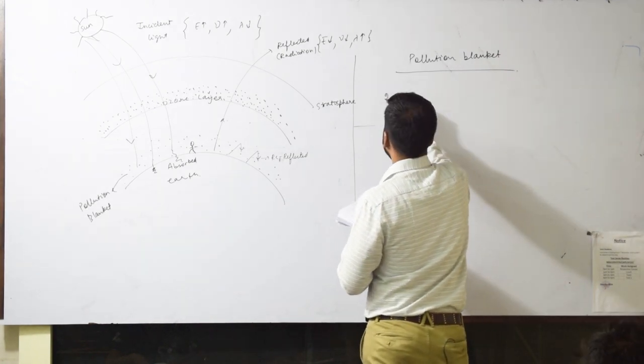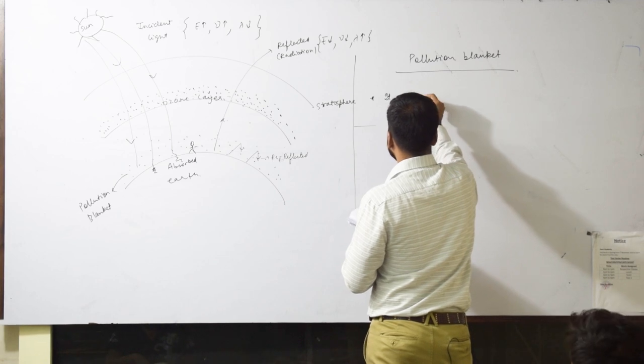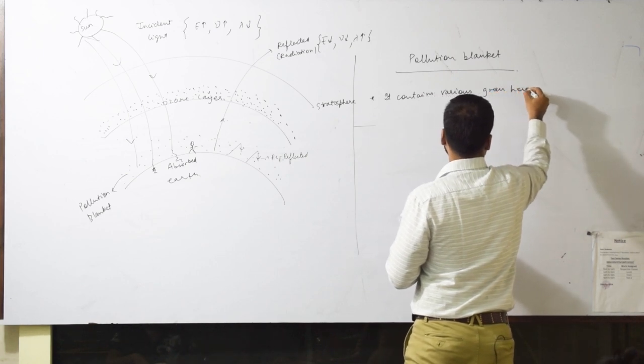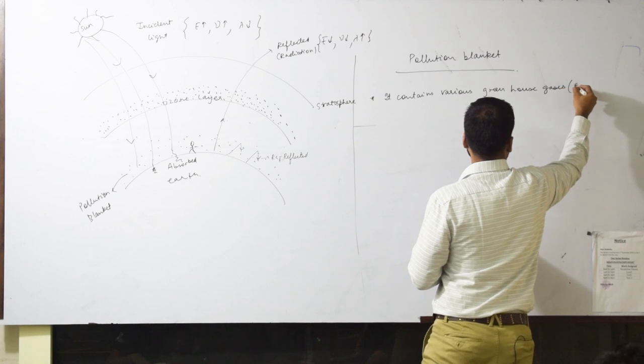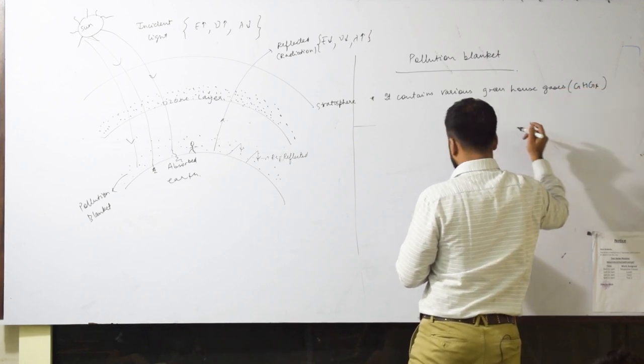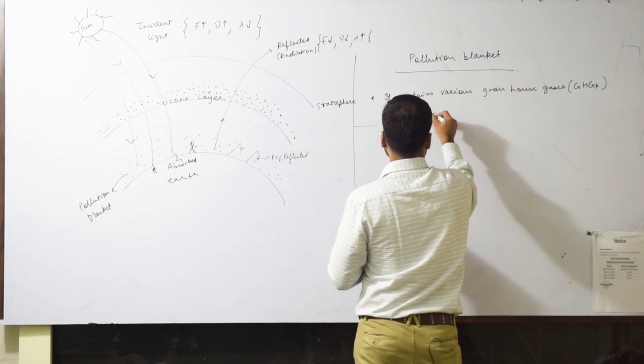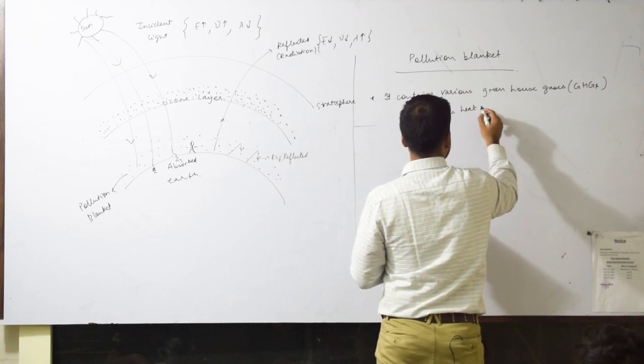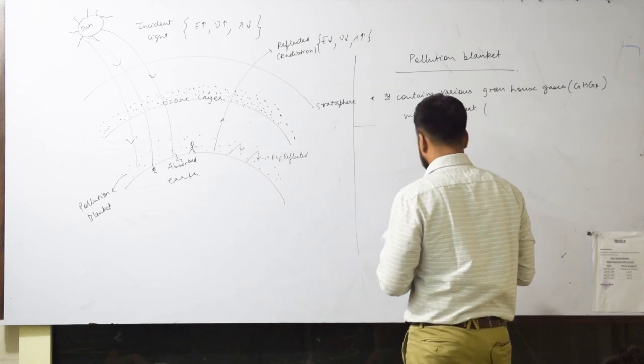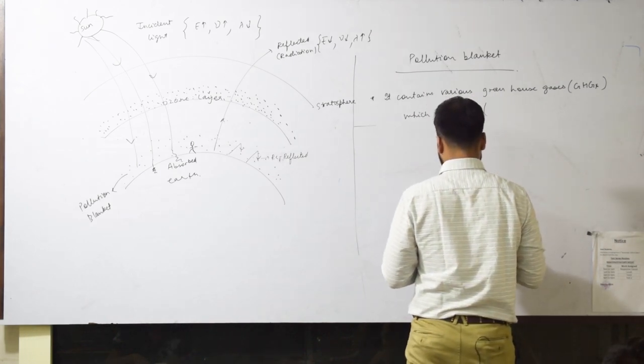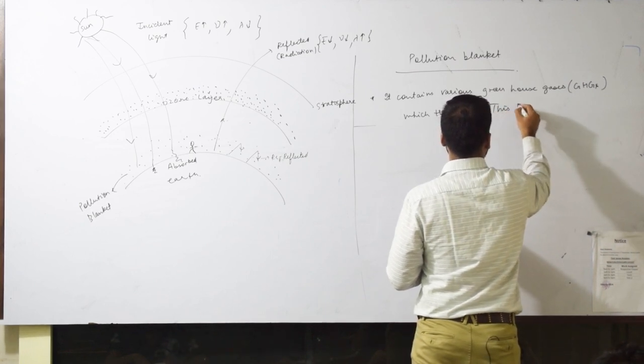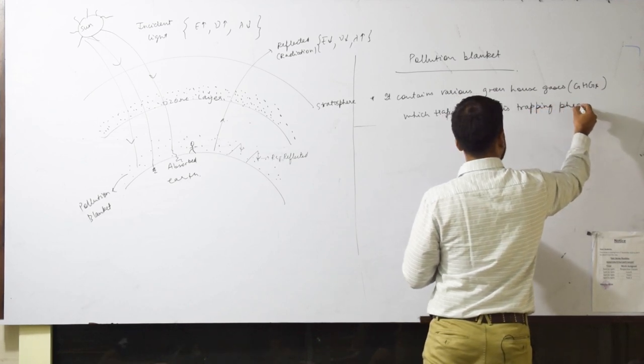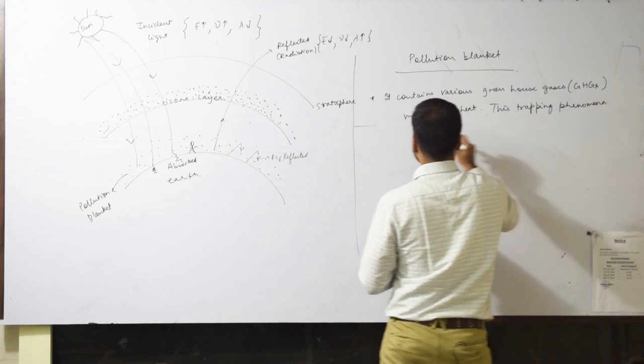We will talk about pollution blanket now. Pollution blanket - the first point is that it contains various greenhouse gases which trap heat, which trap heat. And this trapping phenomena...